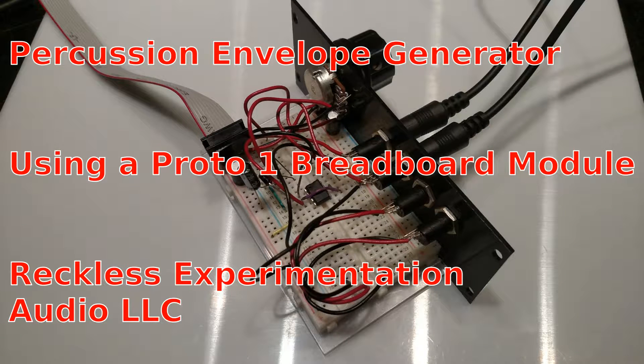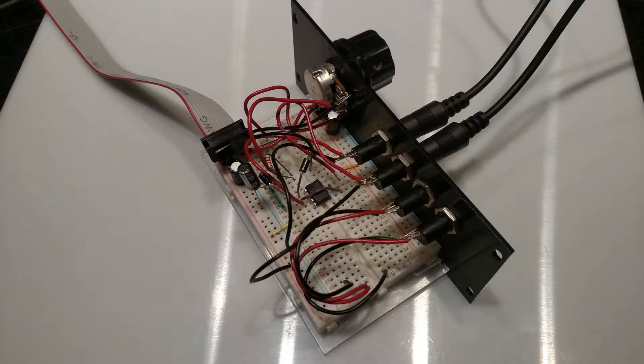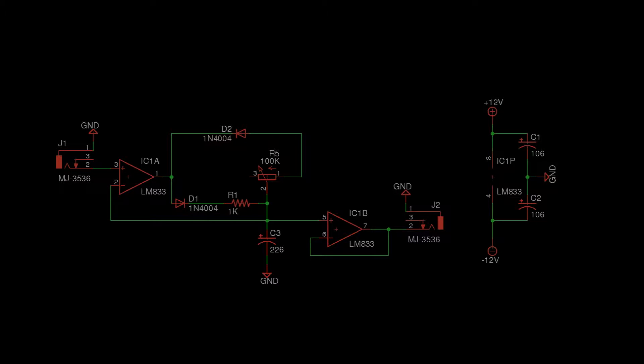Today we are going to make a percussion envelope generator using a Reckless Experimentation Audio Proto-1 Eurorack breadboard module. Parts are listed in the circuit schematic in the description below. First let's look at the circuit schematic and see what's going on.